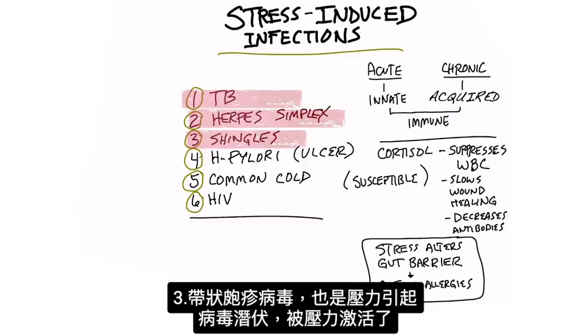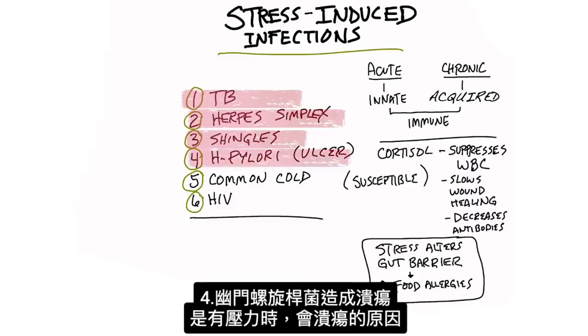Shingles hangs out in a dormant stage and is activated when you go through stress. H. pylori can trigger an ulcer. This is why when you go through stress, sometimes stress can cause an ulcer.